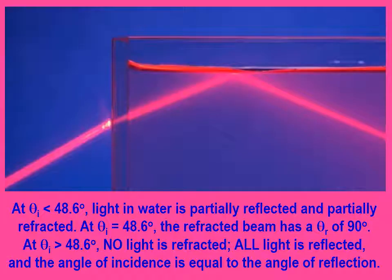At an incident angle less than 48.6 degrees, light in water is partially reflected and partially refracted. At an angle of incidence equal to 48.6 degrees, the refracted beam has a refractive angle of 90 degrees — in other words, it travels right along the boundary. Any incident angle greater than 48.6 degrees means no light is refracted; all light is reflected, and the angle of incidence equals the angle of reflection.